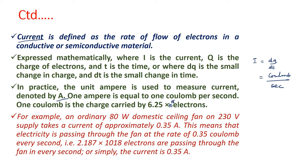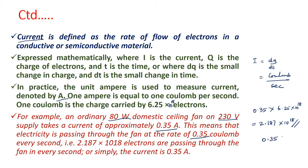Here is one example. An ordinary 80-watt domestic ceiling fan on a 230-volt supply takes a current of approximately 0.35 ampere. This means electricity is passing through the fan at the rate of 0.35 coulomb every second. That is 0.35 × 6.25 × 10¹⁸ electrons, which equals approximately 2.187 × 10¹⁸ electrons per second. Ampere is the unit of current; another unit is coulomb per second.